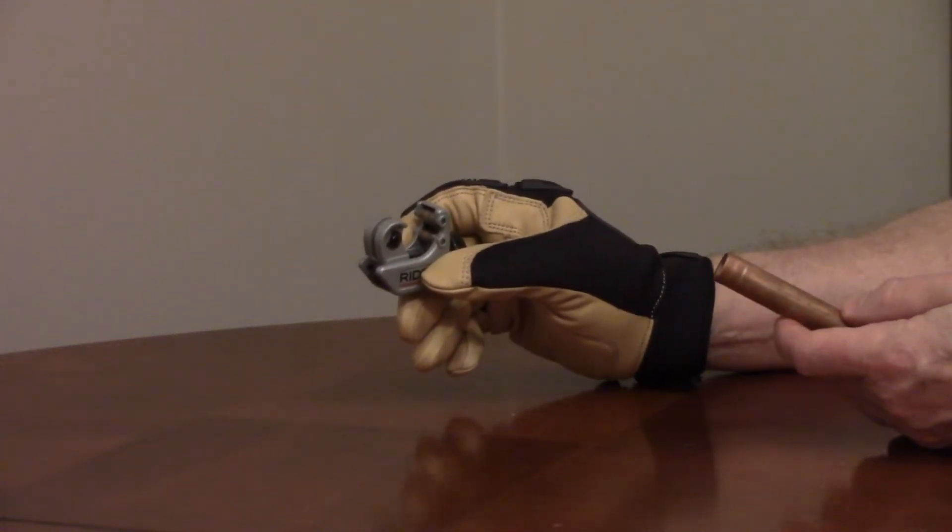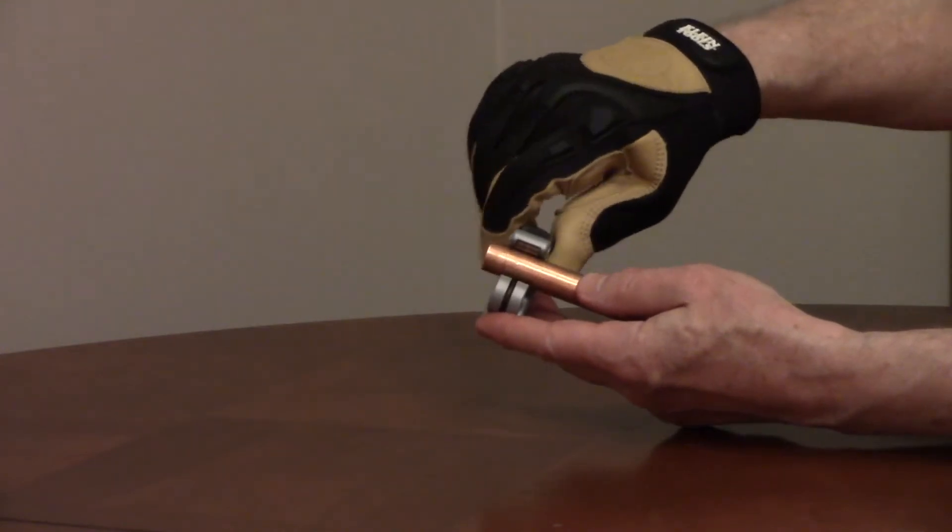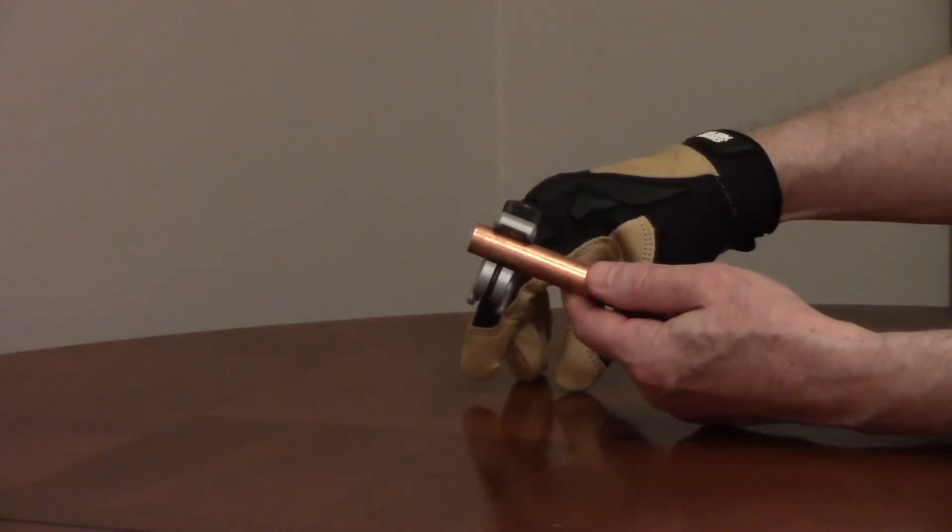To use a mini tubing cutter, insert your tubing or pipe into the jaw and lightly turn the knob until the cutting wheel just touches your tubing.